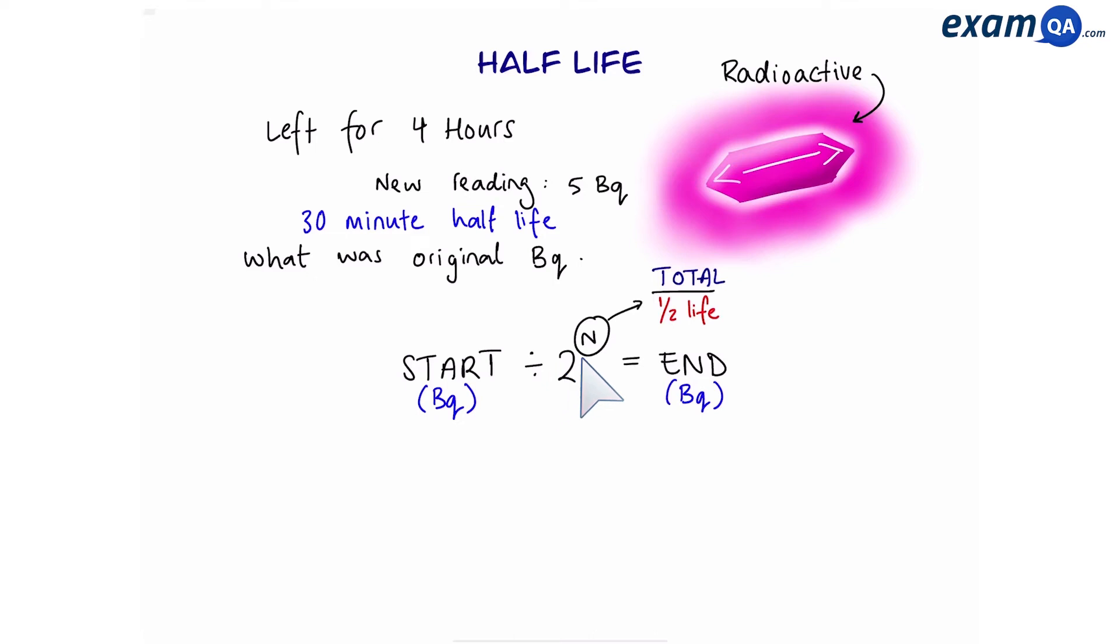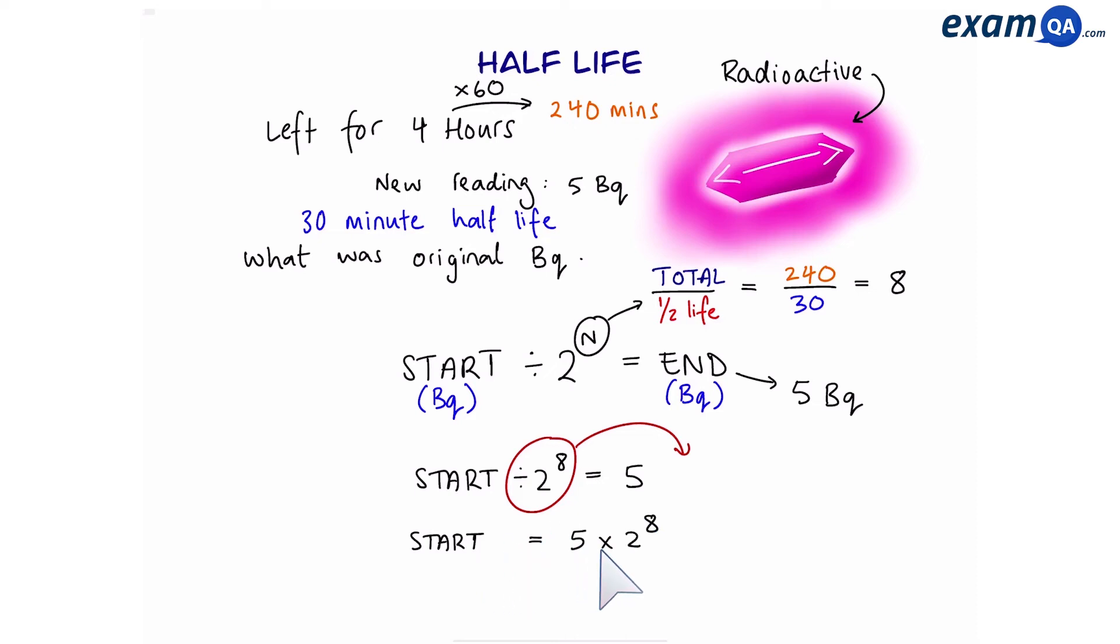So first, we can work out n by doing total time over half-life. Now, the total time, again, is in hours, so we're going to times it by 60 to make it into minutes. And divide it by half-life, which is 30. That gives us 8. Also, we know how many becquerels we have at the end, 5 becquerels. So that gives us start divided by 2 to the power of 8 equals 5. Then we're going to make start the subject, so take this to the right. That gives us start equals 5 times 2 to the power of 8. And that's 1,280 becquerels.